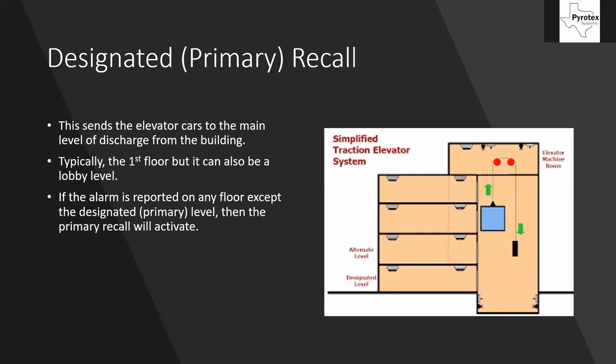When primary recall activates, that car goes all the way down to the designated level, the doors open, and the elevator won't accept any commands. Even if people run in and start pushing buttons, the elevator will sit there because it's been overridden by the fire alarm system - it's being told to stay and wait for emergency personnel. If a firefighter arrives and pushes buttons it won't work either; they have to get the key, put it in bypass mode, and then the elevator is ready for them.